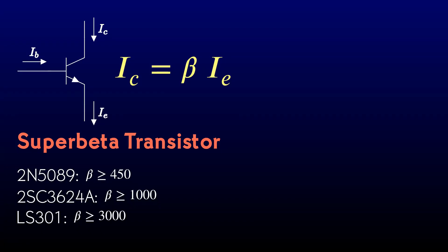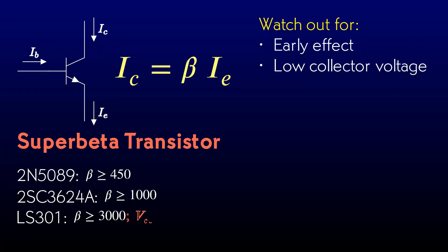Of course, nothing is free in this world. Super-beta transistors have a few gotchas. Their early effect is much worse. That will limit the voltage gain you can get out of these puppies. They often work at a lower voltage limit. For example, the LS301 has a limit of 18 volts collector to emitter. You won't be able to run it off plus or minus 12 volt op-amp supplies. And the beta is often specified at an inconveniently high current. For instance, the 2SC3624A is specified at a collector current of 1 milliamp. That will often mean you need quite a small emitter resistor, which would imply a small base resistance, which would defeat the purpose of having such a high beta in the first place.